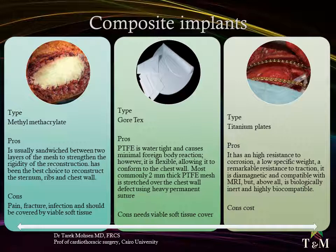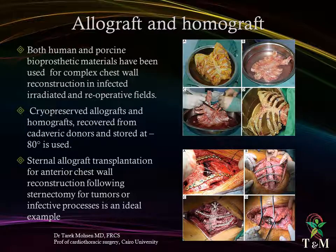Titanium plates have a higher resistance to corrosion, low specific weight, remarkable resistance to traction, are diamagnetic and compatible with MRI, and above all are biologically inert and highly biocompatible; however, these plates are expensive. Both human and porcine bioprosthetic materials have been developed over the past decade in response to the need for complex chest wall reconstruction in infected, irradiated, and reoperative fields.